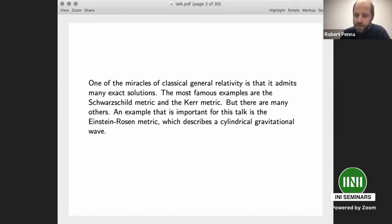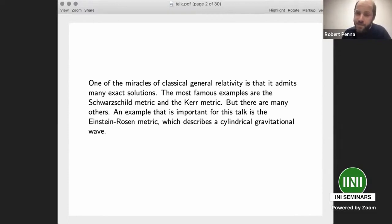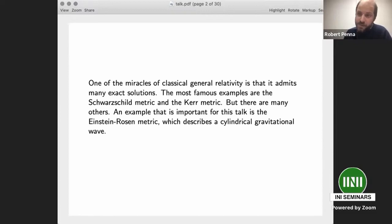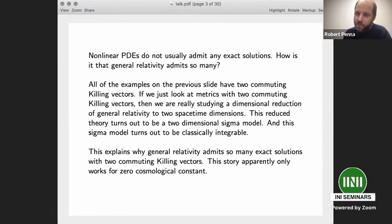One of the miracles of classical general relativity is that it admits many exact solutions. Some famous examples are the Schwarzschild metric and the Kerr metric, but there are many more — whole textbooks full of exact solutions. An important example for this talk is the Einstein-Rosen metric, an exact solution for a cylindrical gravitational wave. This is remarkable because the field equations are nonlinear partial differential equations, and usually nonlinear PDEs don't have any exact solutions.